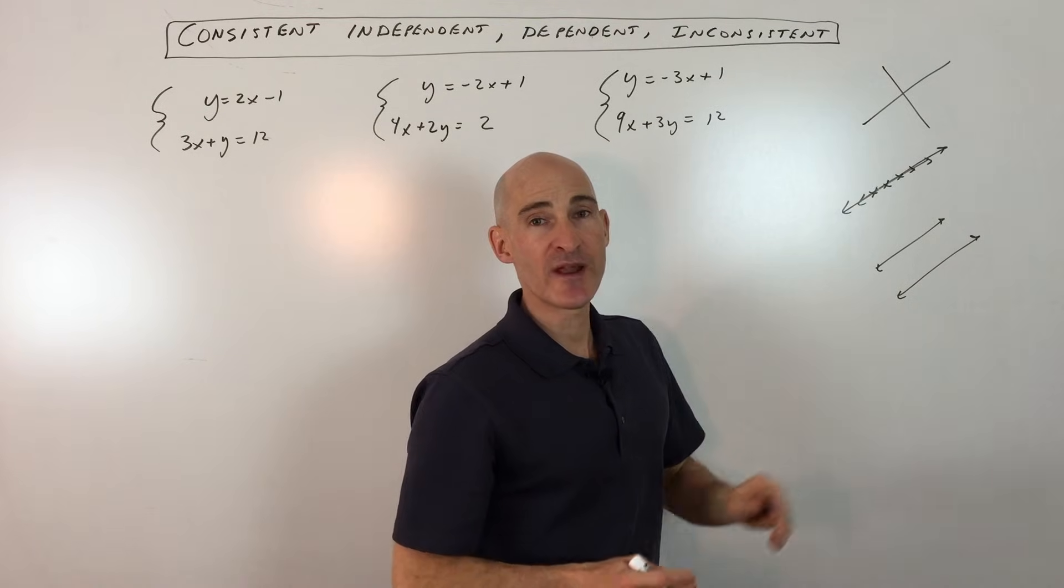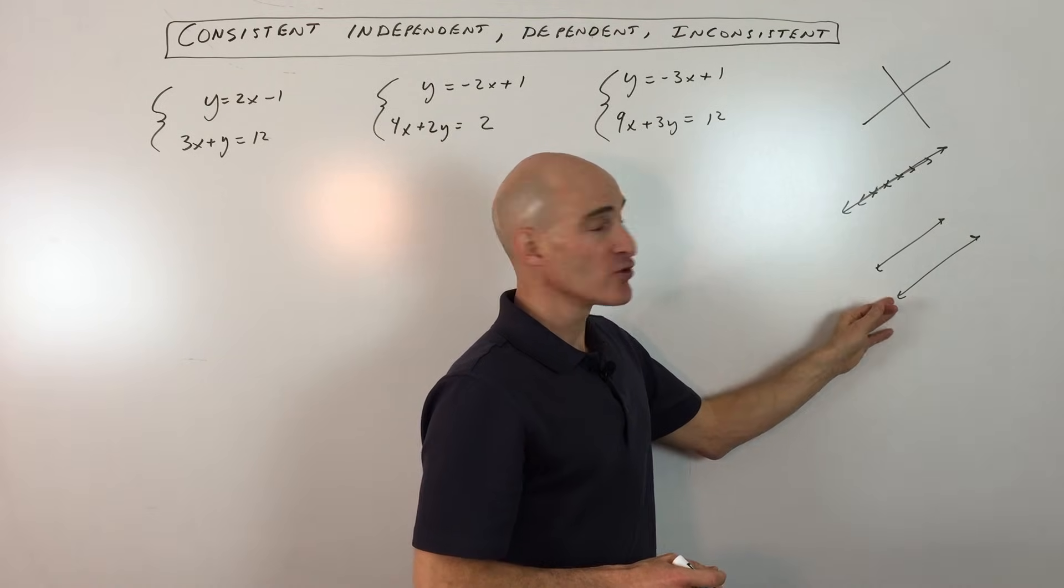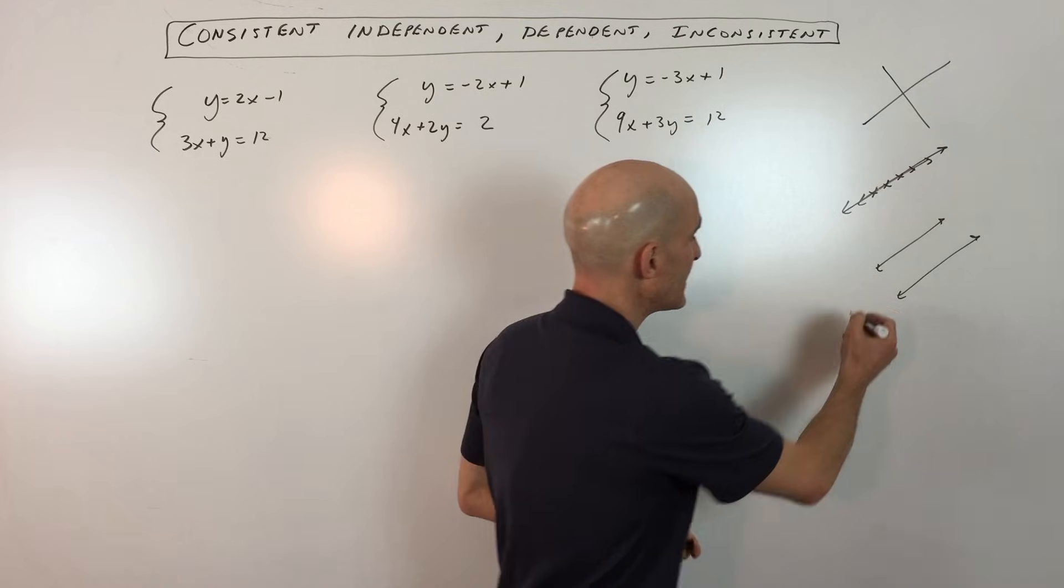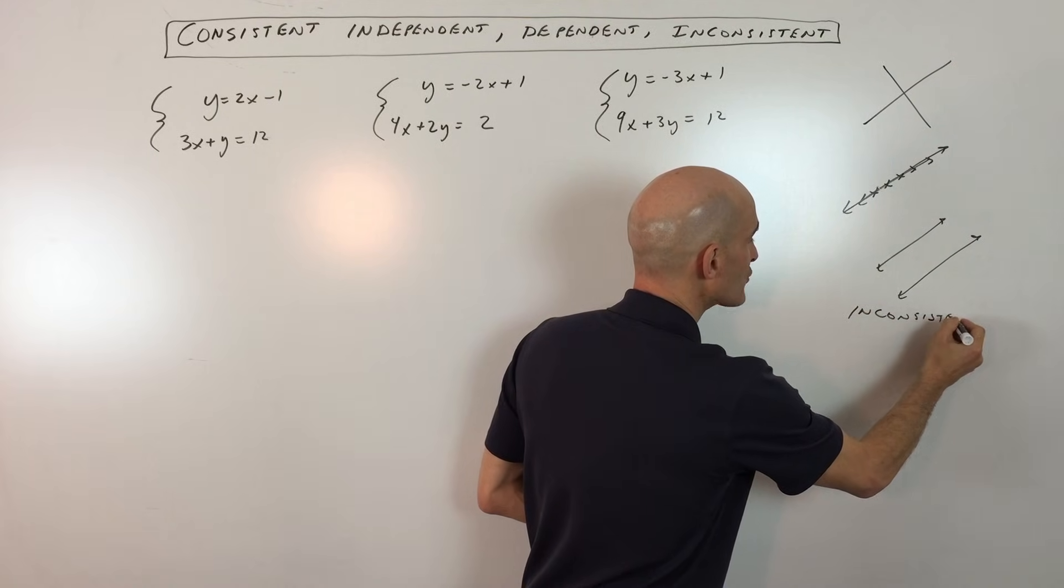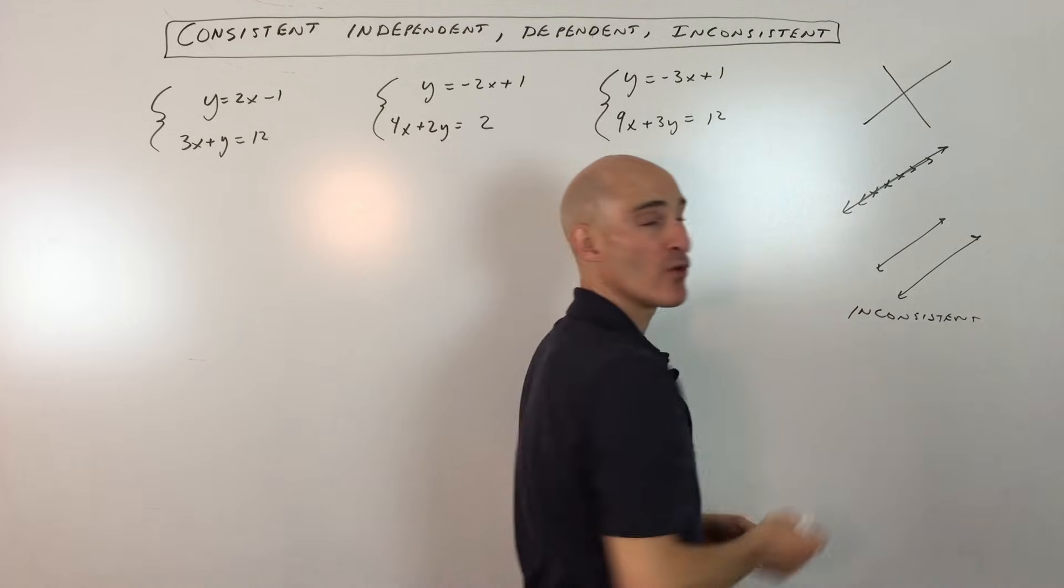So as far as the terminology goes, when there's no solution, when the lines are parallel, this is called inconsistent. That just means that there's no point of intersection, there's no point that they share in common.